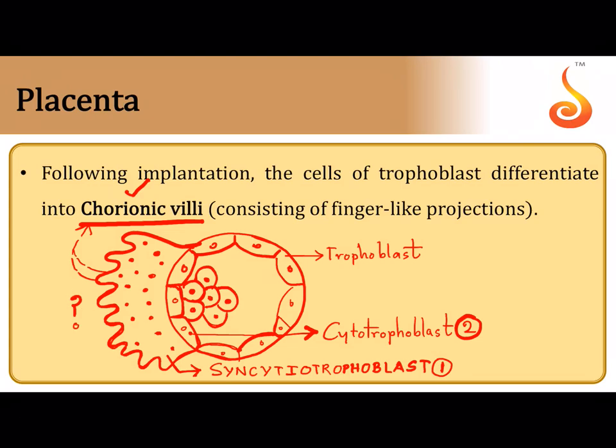The syncytiotrophoblast develops finger-like projections called chorionic villi. This much is clear: formation of chorionic villi by the blastocyst when it attaches to the uterine endometrium. Now let us see why these chorionic villi are formed and what happens next — we are about to begin the discussion on placenta.